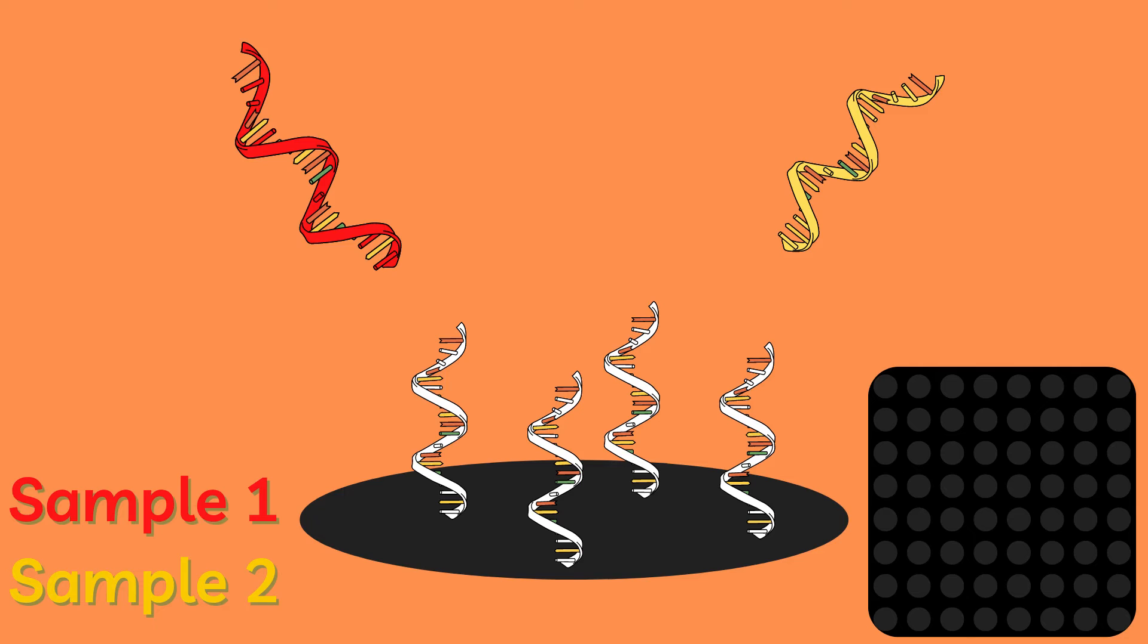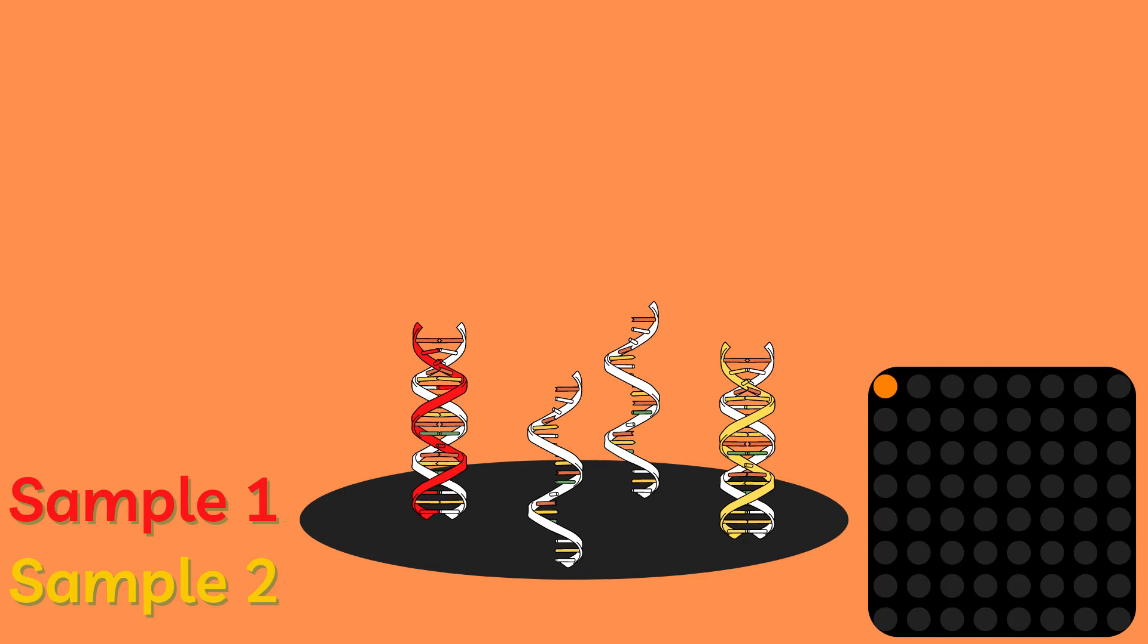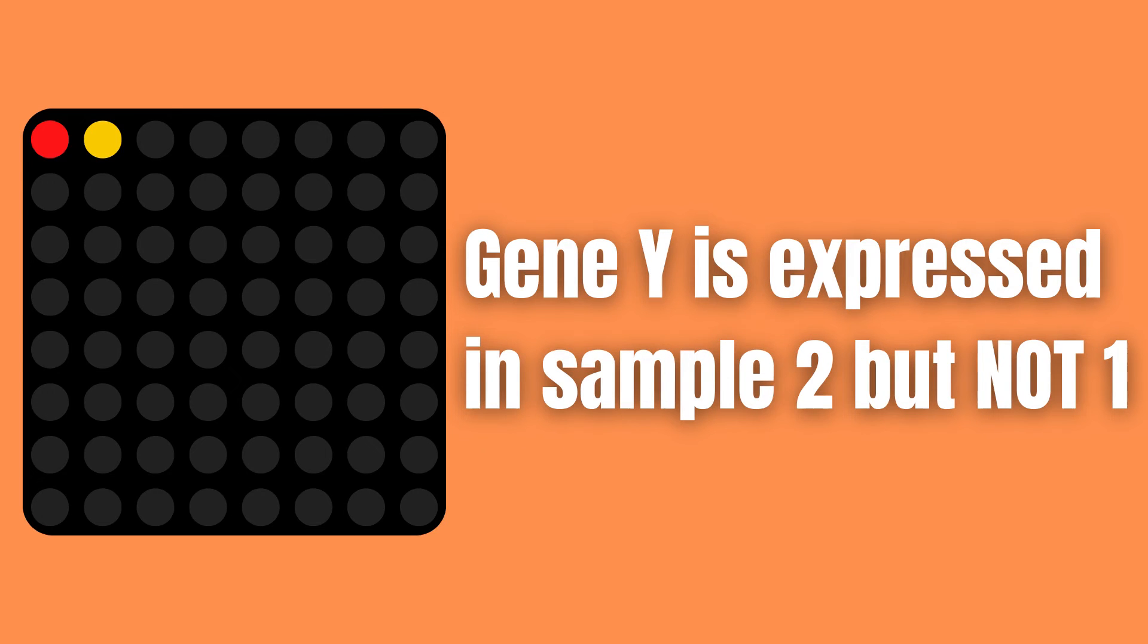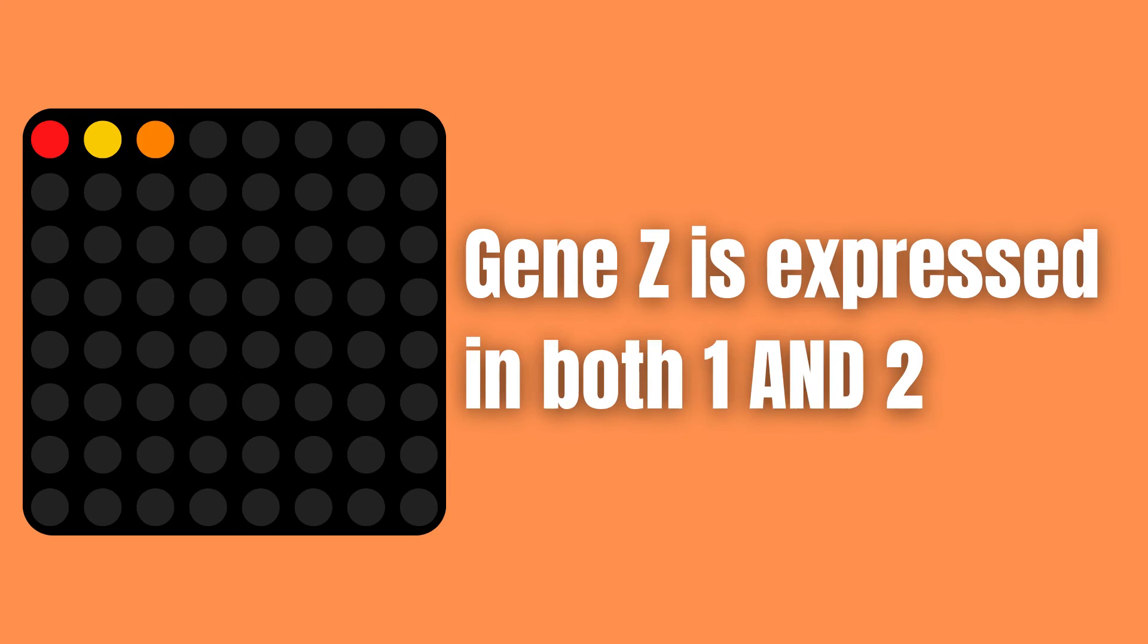Depending on which gene is present, either none, one, or both of our samples' cDNAs may bind to the oligonucleotide of the gene present on the spot. So in our hypothetical case, if a specific spot is red, it means that the gene of that particular spot is expressed in sample one but not in sample two. If it is yellow, the gene is expressed in sample two but not one. And if it's orange, it is expressed in both sample one and sample two.